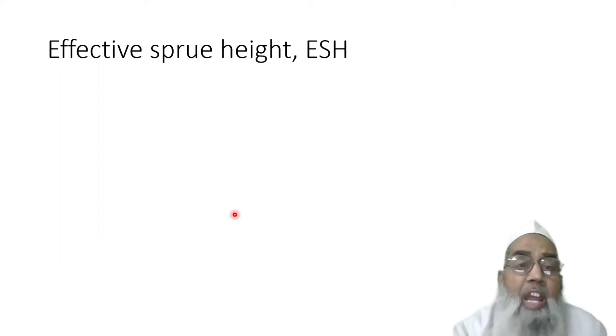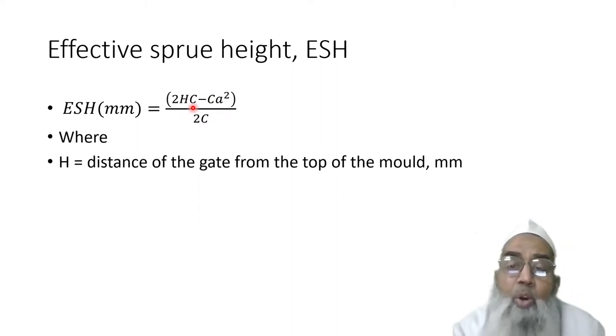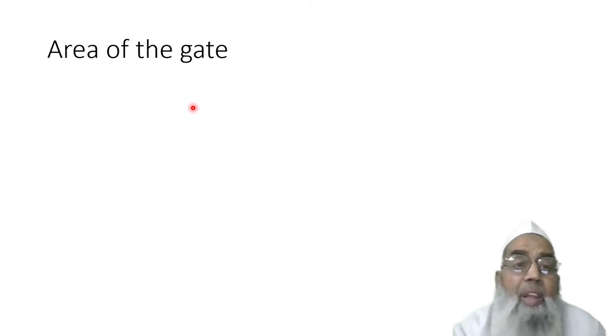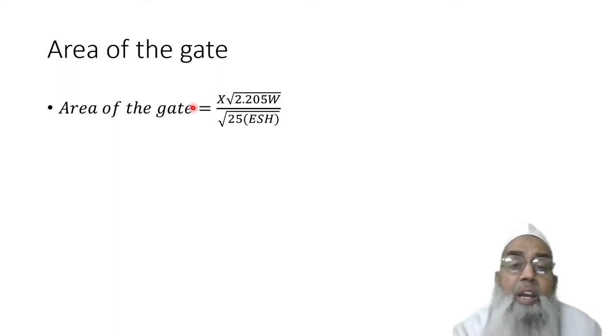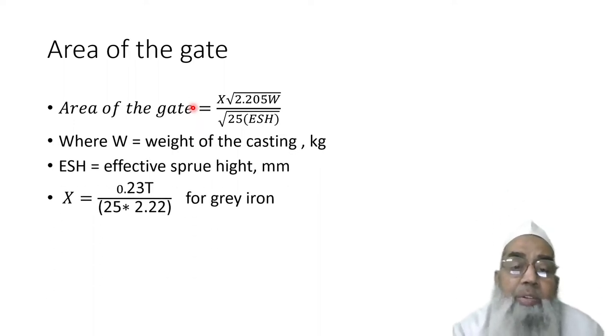With the help of that, we can have an effective screw height given by a formula where H stands for the distance of the gate from the top of the mold in mm, C is the total height of the casting, and C is the height of the casting above the gate. We can have the area of the gate given by this particular formula.